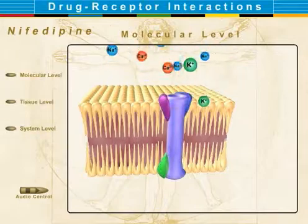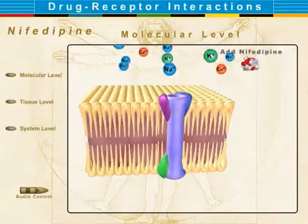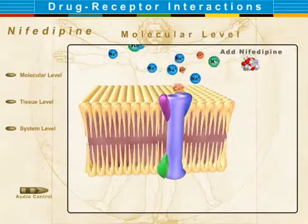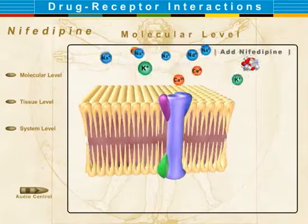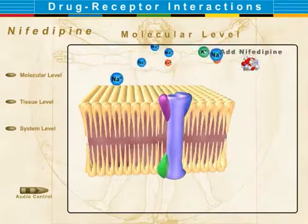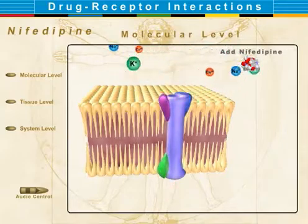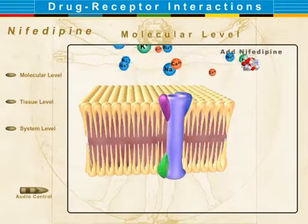At the molecular level, calcium enters smooth muscle cells through voltage-gated calcium channels and causes myofibrils to contract. This results in vascular smooth muscle contraction and causes vasoconstriction.